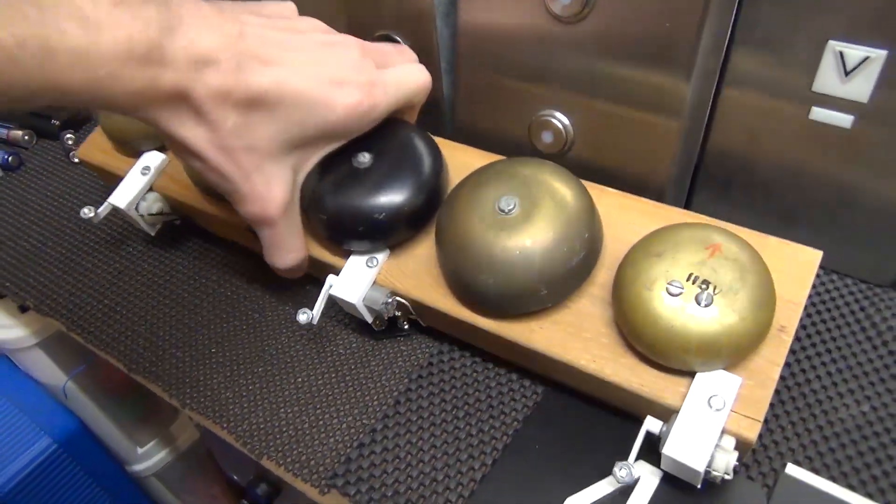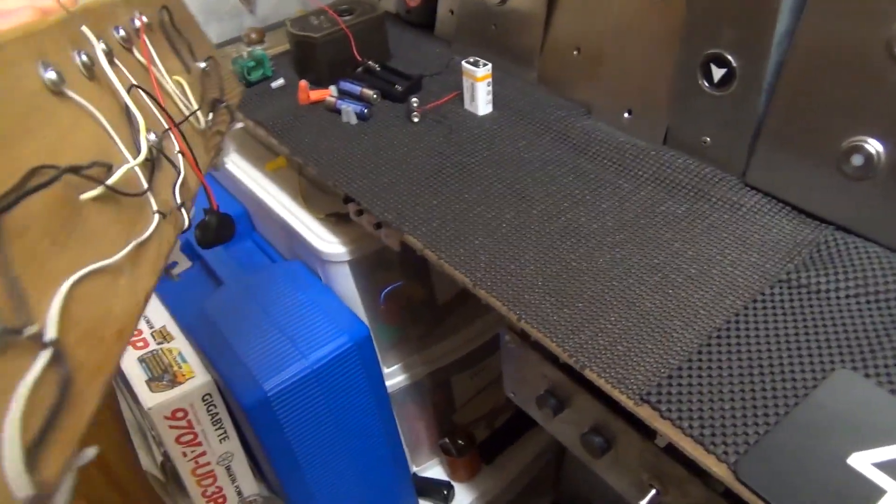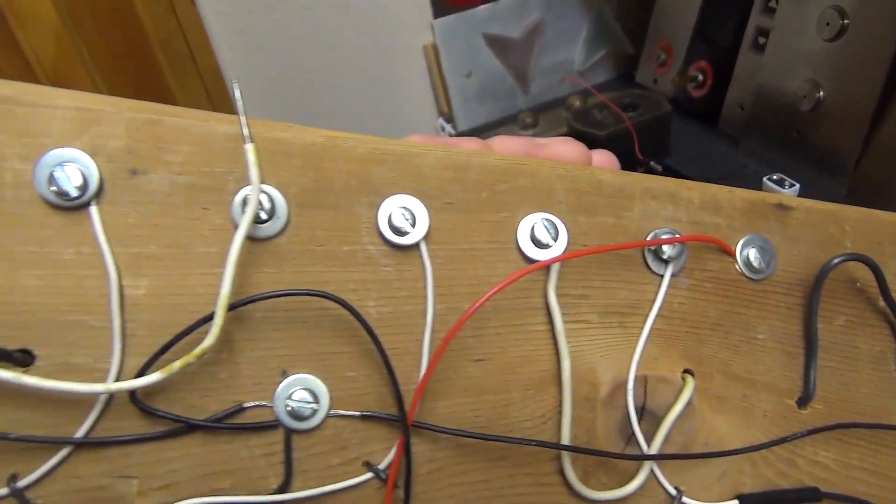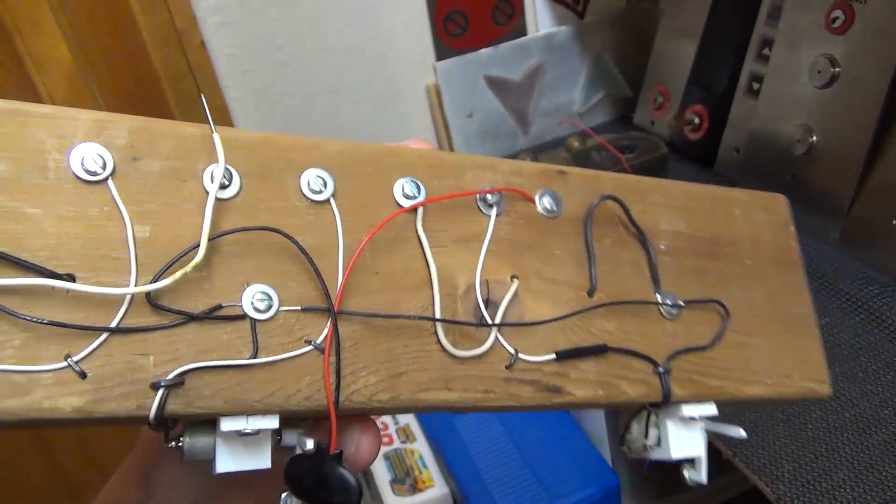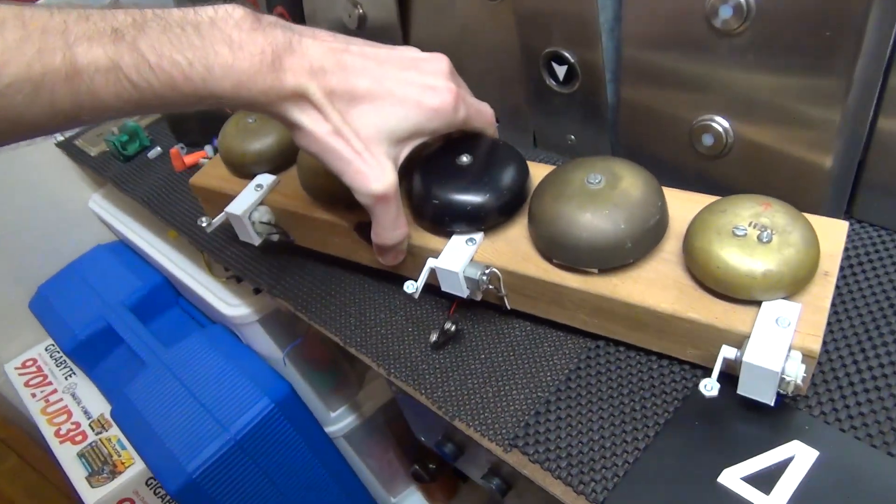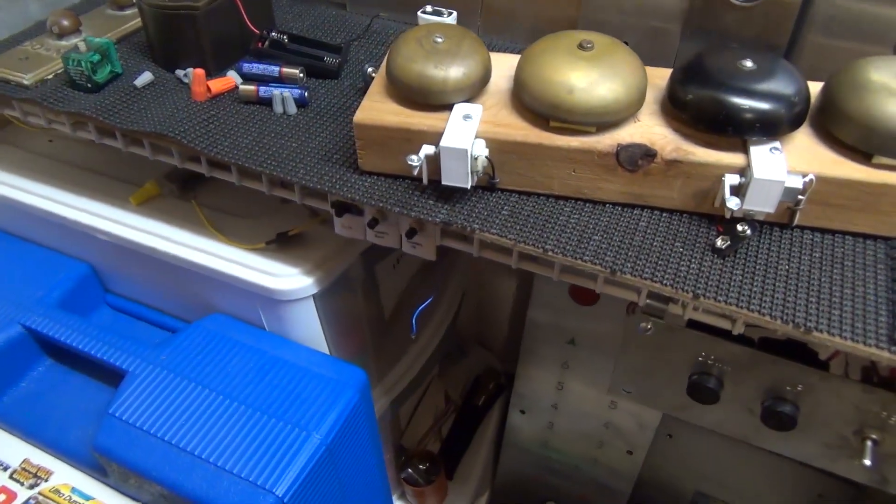Before we start building anything, it's time to figure out where this thing is going to go. On the back, I've got my six terminals - our common and then our five pins for each bell. So this will make it really easy to build the controller. We'll only need six wires going to the controller, wherever we decide to build that.